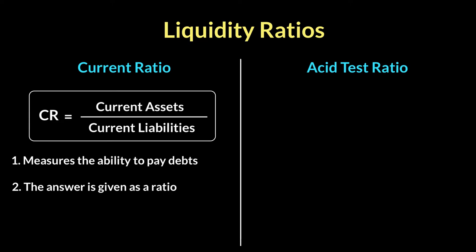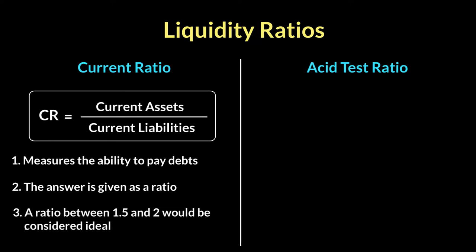A company is always looking to fall within a range of 1.5 to 2 — that is, 1.5 to 1 and 2 to 1. Anything between that would be considered a good current ratio to have. That means you don't have too much illiquid assets, you don't have too much inventory, and money is being put to good use with no wastefulness. If your ratio is between 1.5 to 1 and 2 to 1, then you're doing a good job of maintaining your liquidity.